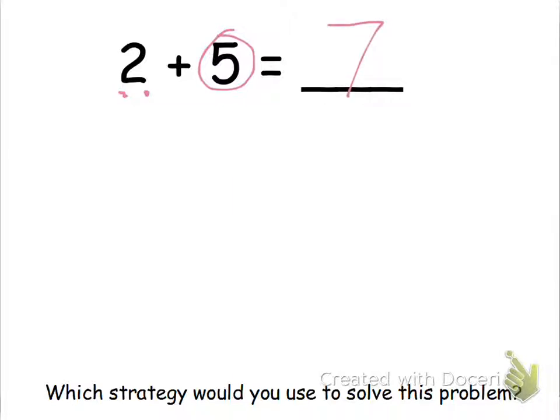So now let's just draw a picture. 1, 2, and then 1, 2, 3, 4, 5. So let's just count it. 1, 2, 3, 4, 5, 6, 7. So yep, we get the same thing.